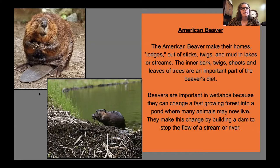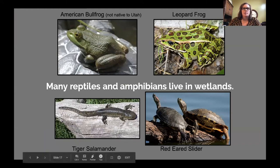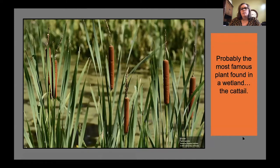Other animals that live in the wetlands include the American bullfrog — which is not native to Utah — the leopard frog, tiger salamander, and red-eared slider. Many reptiles and amphibians live in the wetlands. Look at their different adaptations — some have camouflage that helps keep them safe from predators. Probably the most famous plant found in the wetland is the cattail.